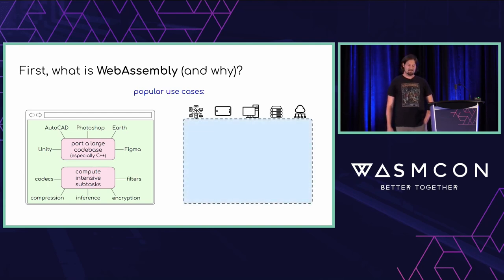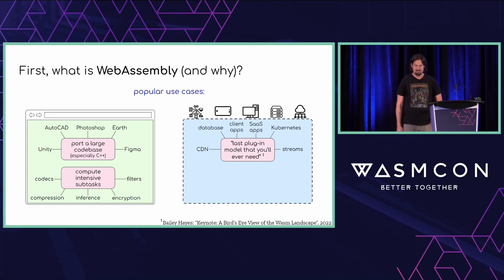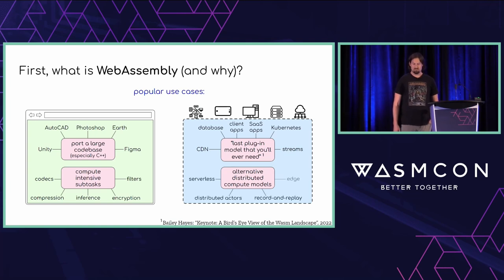Outside of the browser, it's popular to embed Wasm in your existing system to bring your guest code closer to your system. Examples include CDNs like we're doing at Fastly, databases, client apps, SaaS apps, Kubernetes, and streams. People are also using Wasm to explore alternative models of distributed computing, like serverless, distributed actors, record and replay, and edge computing — also like we're doing at Fastly.